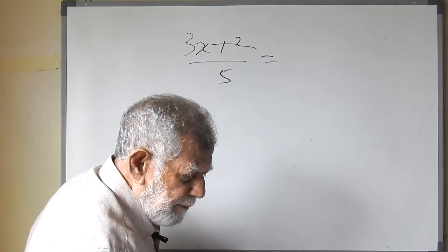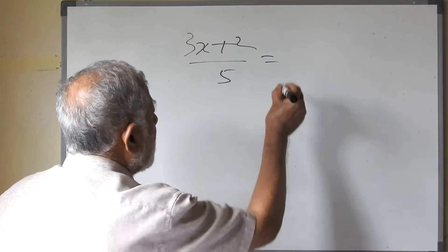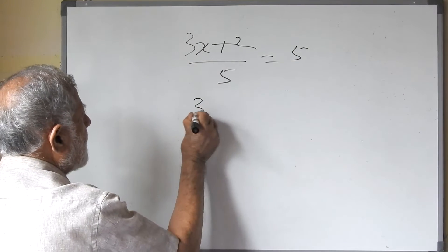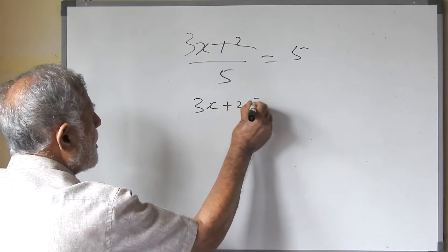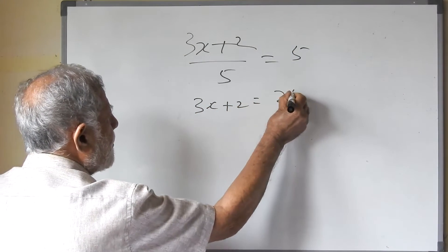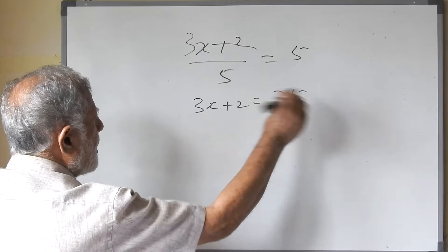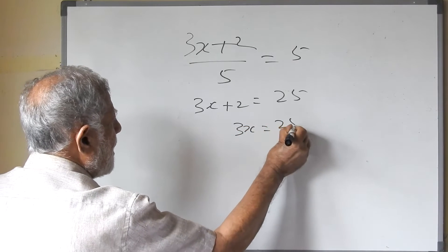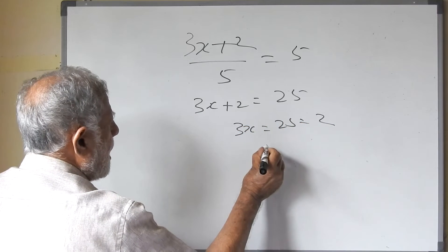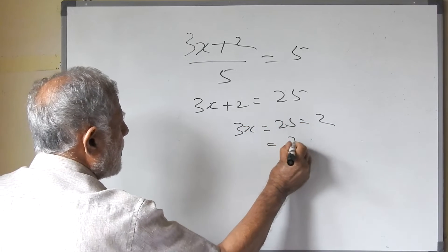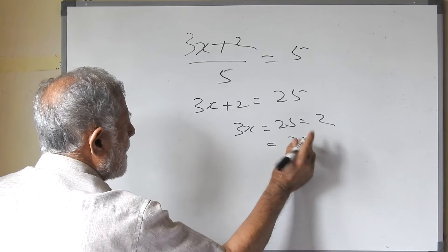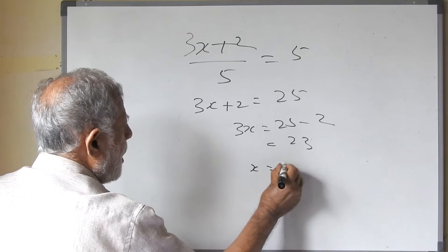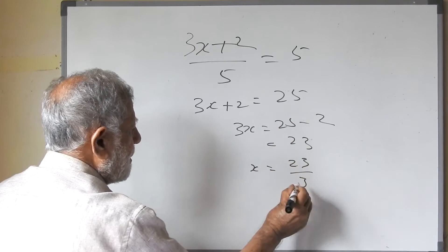Next: 3x plus 2 upon 5 equals 5. It is all the same thing. 3x plus 2 is equal to 25. So bring 2 to the other side: 3x equals 25 minus 2, that is equal to 23. So x is equal to 23 upon 3.